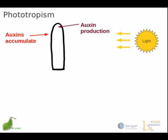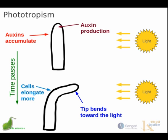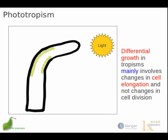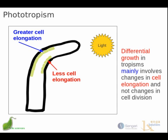As the light shines from the side, auxins are produced and they accumulate on the side away from the light. As time passes, the tip of the shoot begins to bend towards the light because the cells away from the light elongate more than the cells on the side of the shoot towards the light. Differential growth in tropisms mainly involves changes in cell elongation, not changes in cell division. We have greater cell elongation on one side of the plant than the other, and this causes the shoot to turn towards the light. It is under the control of auxins.